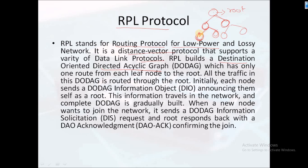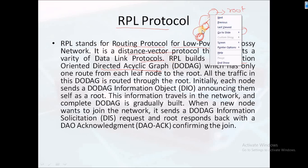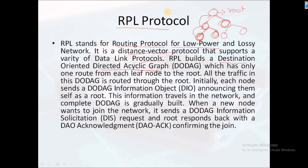The leaf nodes are formed under the root node in the destination oriented DODAG structure. All traffic is routed through this graph. Now, if there is a new node that wants to join the network, it will send a message to request to join.